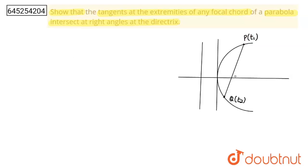Now I am going to write one concept. We all have studied that if t₁ and t₂ are endpoints or extremities of a focal chord, then t₁ × t₂ is equal to minus 1. This is the first concept.